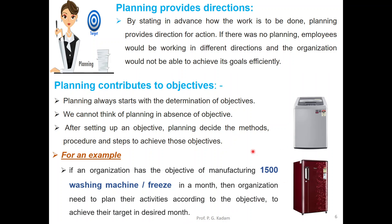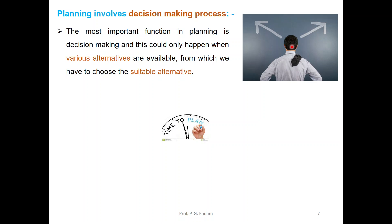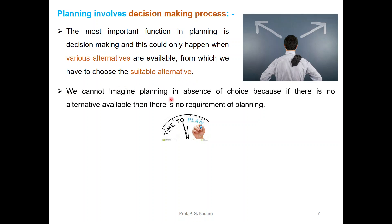So what does the organization have to plan? It has to plan to manufacture the washing machines or fridges within one month according to its objective. Planning also involves the decision-making process — when there are various alternatives available, we have to choose the most suitable one. We cannot imagine planning in the absence of choice, because if no alternative is available, there is no requirement for planning.